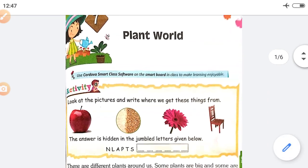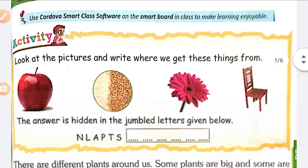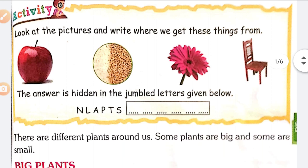First, you have given the activity. Look at the pictures and write where we get these things from. There are some apples, some cereals, and a flower chair, which means it is furniture. Where do we get it?